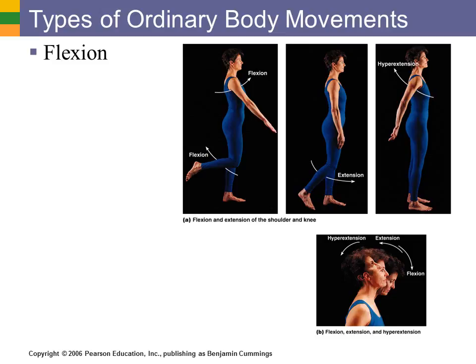We're going to cover some ordinary body movements. One is flexion. Flexion would be any kind of movement within the sagittal plane that is going to decrease the joint angle, or in other words bring two bones together. Starting in anatomical position with the arm down and moving it forward — that is flexion. You can also do the same thing at the elbow, bringing the forearm up, or as shown at the knee, bringing two bones closer together or decreasing the joint angle.